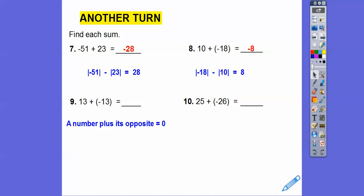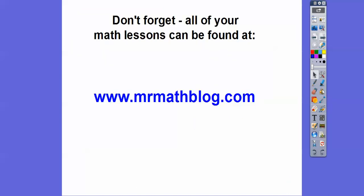13 plus negative 13 is 0. 25 plus negative 25 equals 0. Alright, I hope that lesson makes sense. Take care.